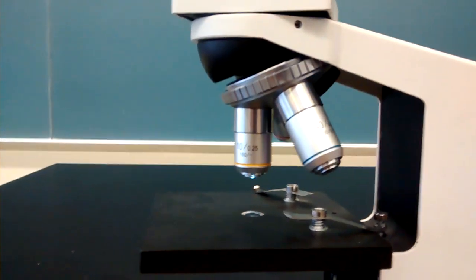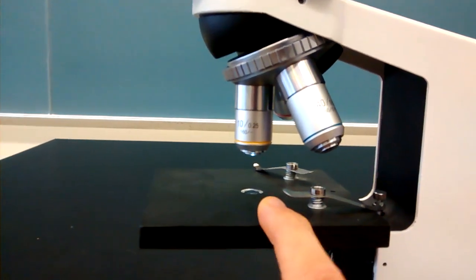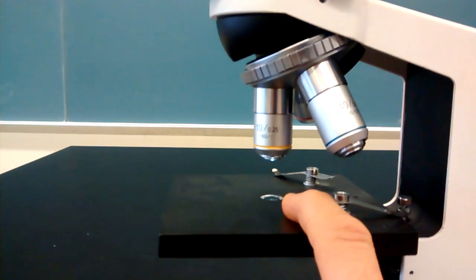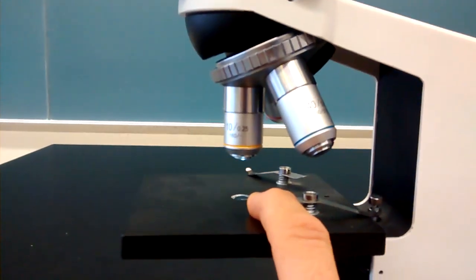Underneath the objective lenses is the stage. The stage is where you place your slide. The portion of the slide that you wish to see has to go over the opening in the stage.